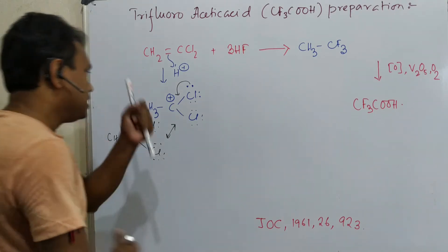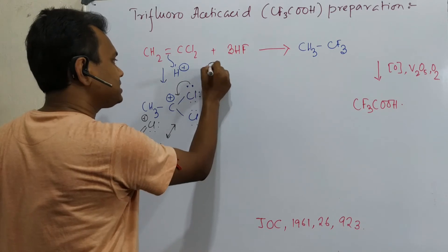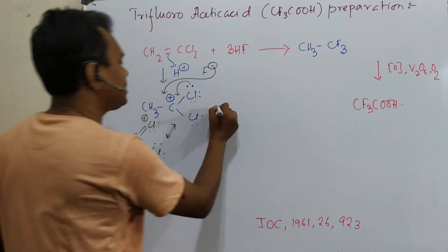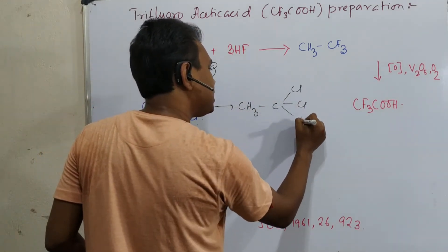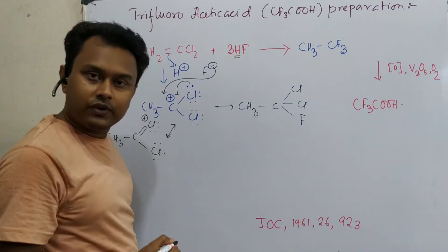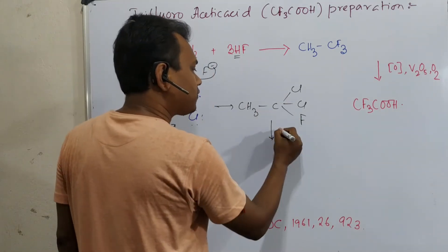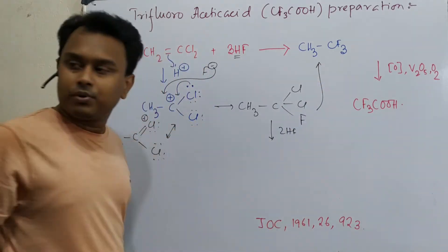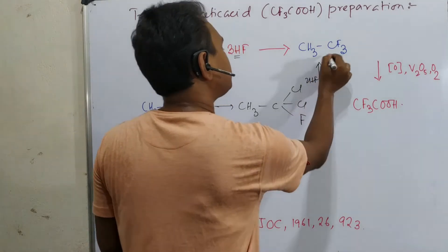In the next step, this H+ along with F- is there. So F- will attack. And ultimately it will result in CH3-C-Cl-Cl-F. Remember, in the reaction medium additional 2 equivalent of HF are there. I have previously discussed this substitution reaction is possible. So ultimately after 2 more HF reactions, it will produce CH3-CF3.